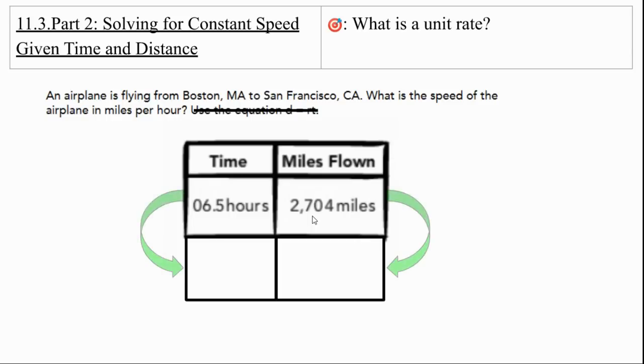We have to think about what it's saying. We have this relationship. We're going to do the same thing to both sides, but we need to figure out per hour. Per means one. So for one hour. So if I go from 6.5 to 1, is it getting bigger or smaller? It's getting smaller. So is it division or multiplication? Division divided by what? 6.5. 2,704, using a calculator, divided by 6.5 is going to be 416 miles per hour.